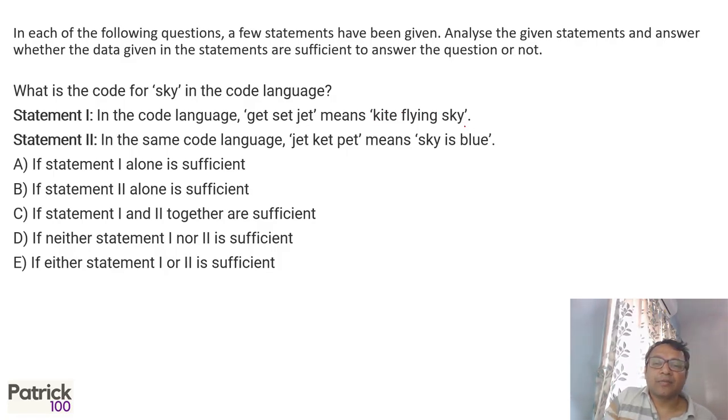What is the code for sky? If you look at sky in both first and second statements, what is common? If you look at it, 'jet' is common. So which means sky should be coded as 'jet'. So you require both the statements to get the answer, but together they are sufficient.